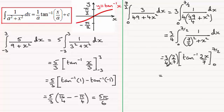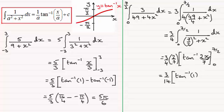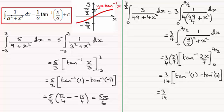3 quarters times 2 sevenths gives 3 fourteenths. Putting the limits in: substituting 7 over 2 for x gives the inverse tan of 1. Substituting 0 gives the inverse tan of 0, which is 0. So we end up with 3 fourteenths times the inverse tan of 1. That value lies between 0 and pi upon 2, so on the calculator you get pi upon 4. So it's 3 fourteenths times pi upon 4, minus 0. Cleaning this up, we end up with 3 pi over 56.